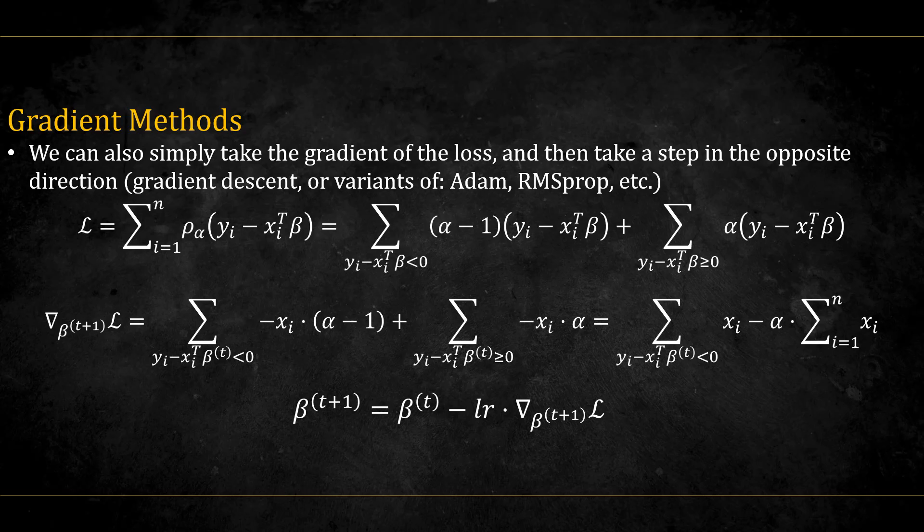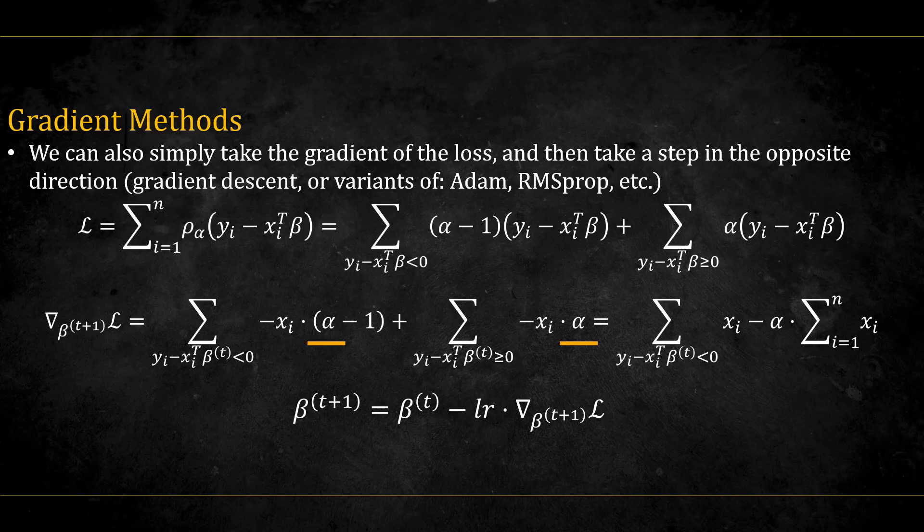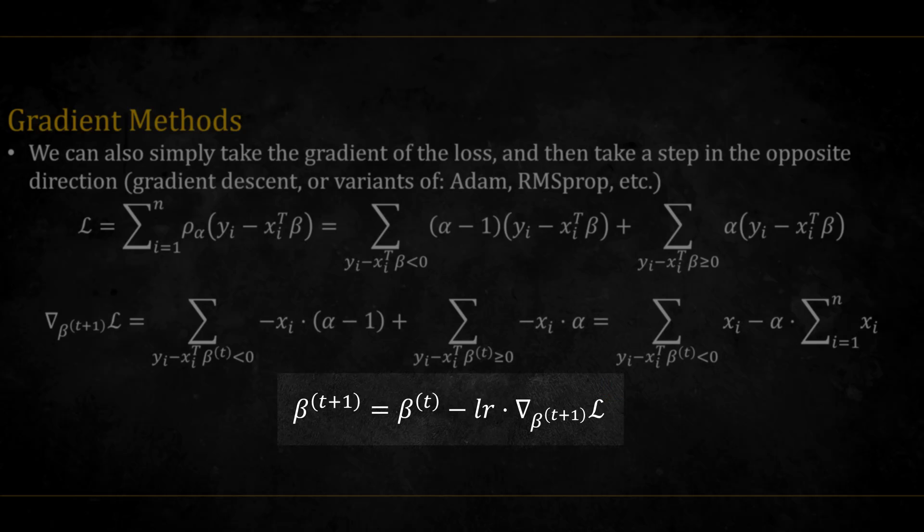Another possibility is to calculate the gradient, and then use some gradient methods, such as gradient descent or any of its variants, Adam, RMSprop, etc. In order to take the gradient of the loss, let's first divide the sum to the cases where the residuals are below zero, and when they are greater or equal to zero. Now, when we differentiate with regards to beta, we get minus xi for both terms, multiplied by alpha minus 1 and alpha respectively. We can unite the alpha term to be across all the sum, and so we finally get this. We can now take a step in the opposite direction of the gradient.